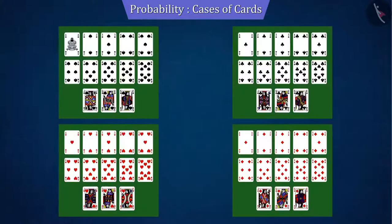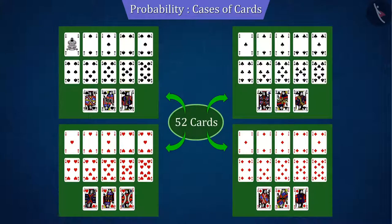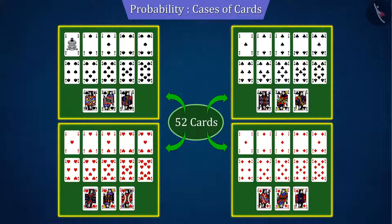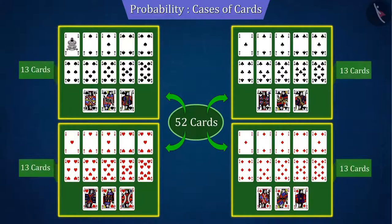There are a total of 52 cards in a deck, which are divided into 4 suits — that is, each suit has 13 cards. Each suit has its own identity.